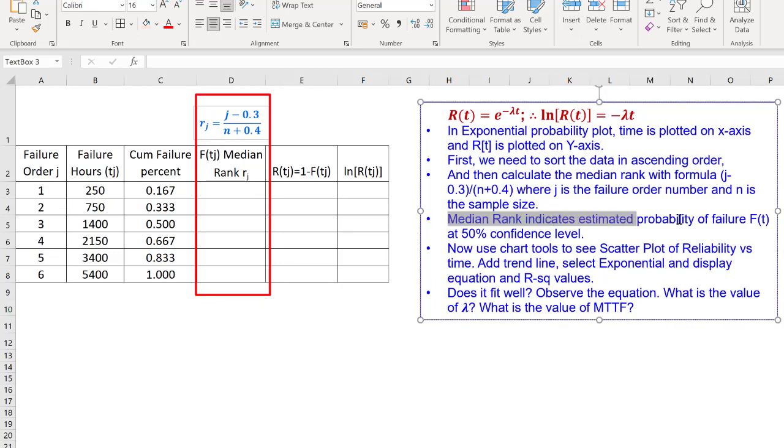Median rank indicates estimated probability of failure F(t) at 50% confidence level. So, let us use the median rank. I will say, equal to J is, I select the cell, minus 0.3 divided by N plus 0.4 will all be 6.4 for all the rows. I can convert this into percent, but I will leave it like that. This is the estimated probability of failure represented in median ranks.